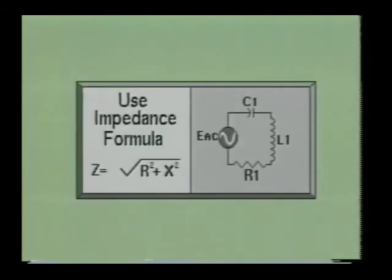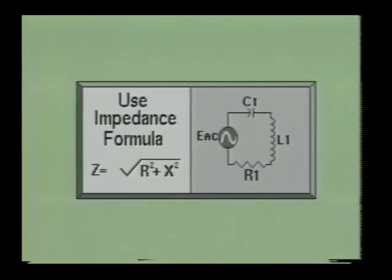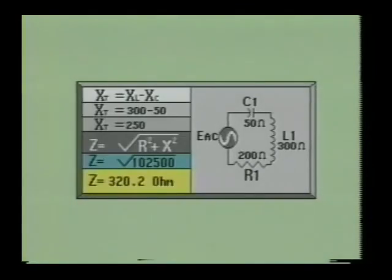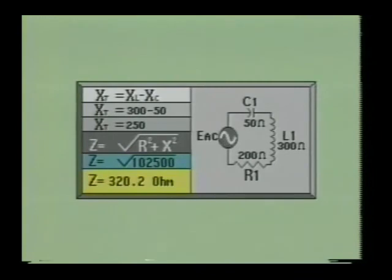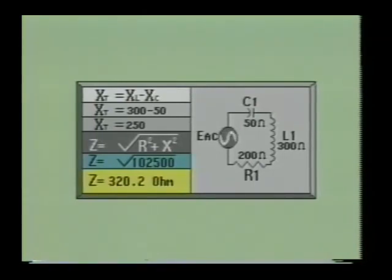Many circuits, however, will contain inductive reactance, capacitive reactance, and also resistance. Therefore, to determine total opposition to the flow of current in a series AC circuit, you must use the impedance formula. By assigning values to the components in our circuit, we are able to determine the circuit's impedance. We start by subtracting the capacitive reactance from the inductive reactance. Next, we square the resistive value and the reactive value, then add the two sums together. Next, we take the square root of this value. We see that the impedance of this circuit is 320.2 ohms.